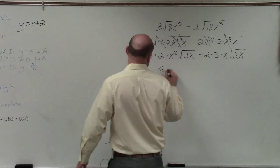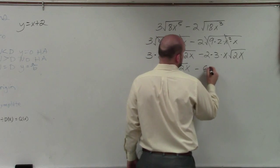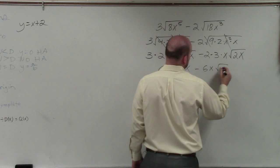Simplify these. I get 6x squared square root of 2x minus 6x times the square root of 2x.